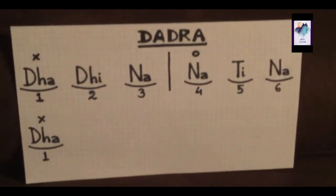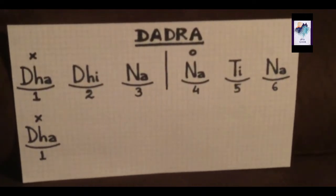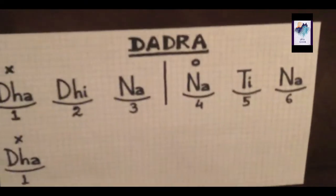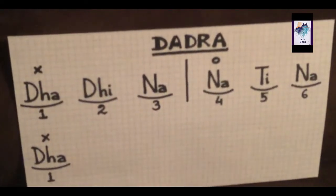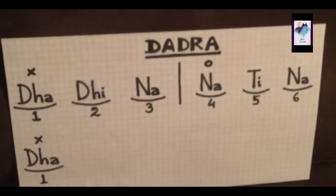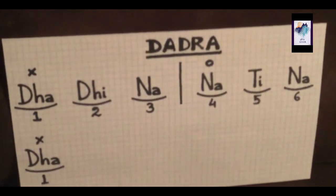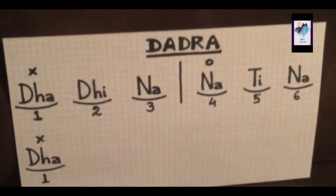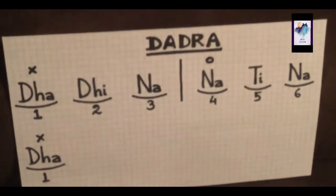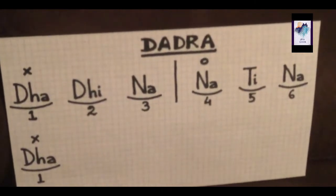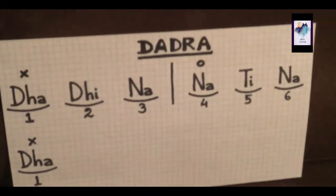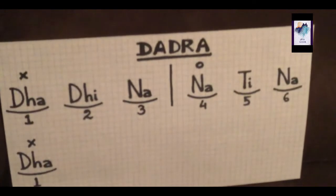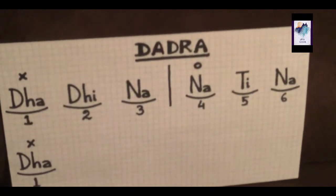Dha Dhi Na Na Ti Na. Dadra Tal is a six-beat Tal having two divisions, three beats in each division. One Tali and one Khali are on the first and fourth beats. And the Theka is Dha Dhi Na Na Ti Na Dha.